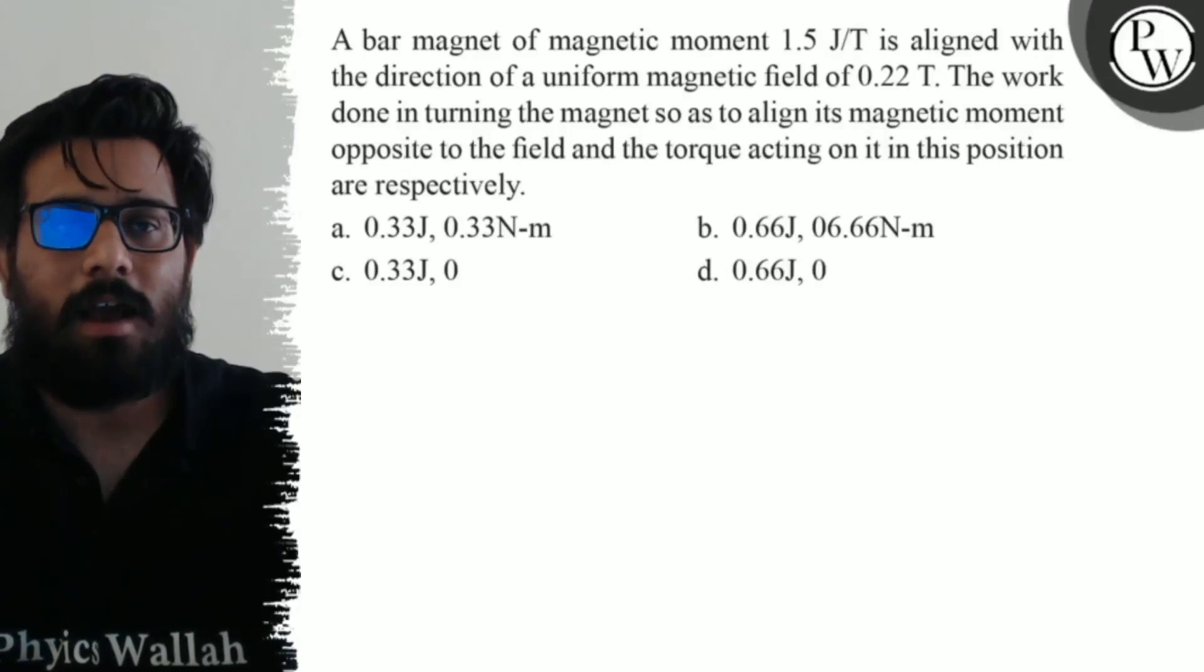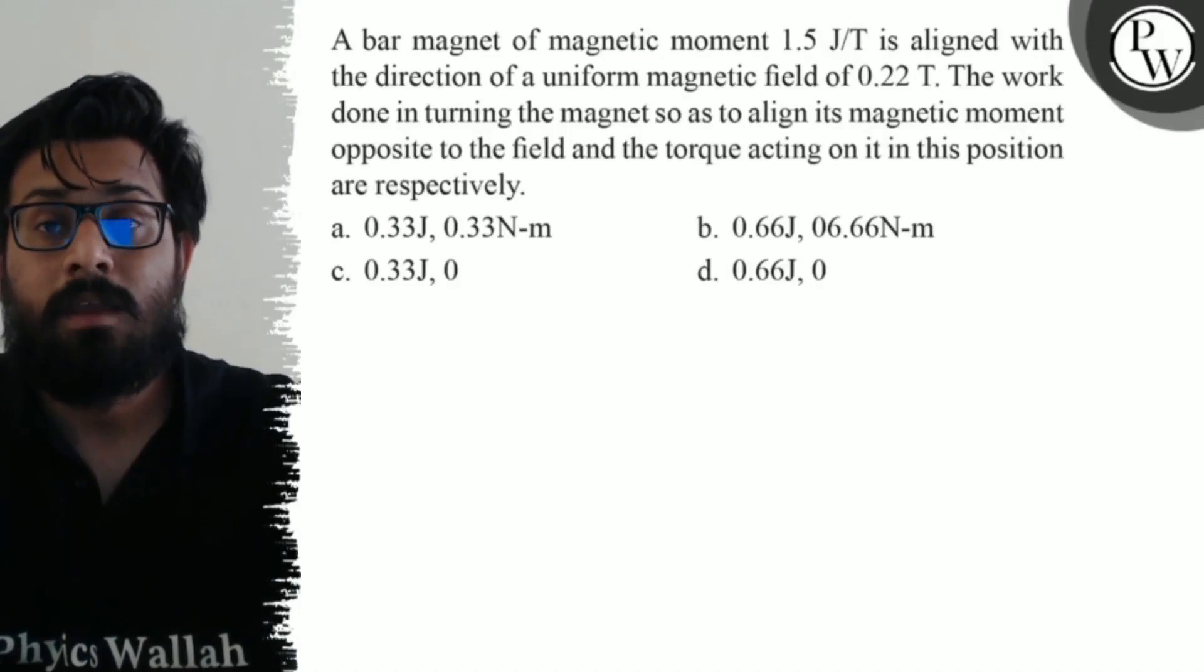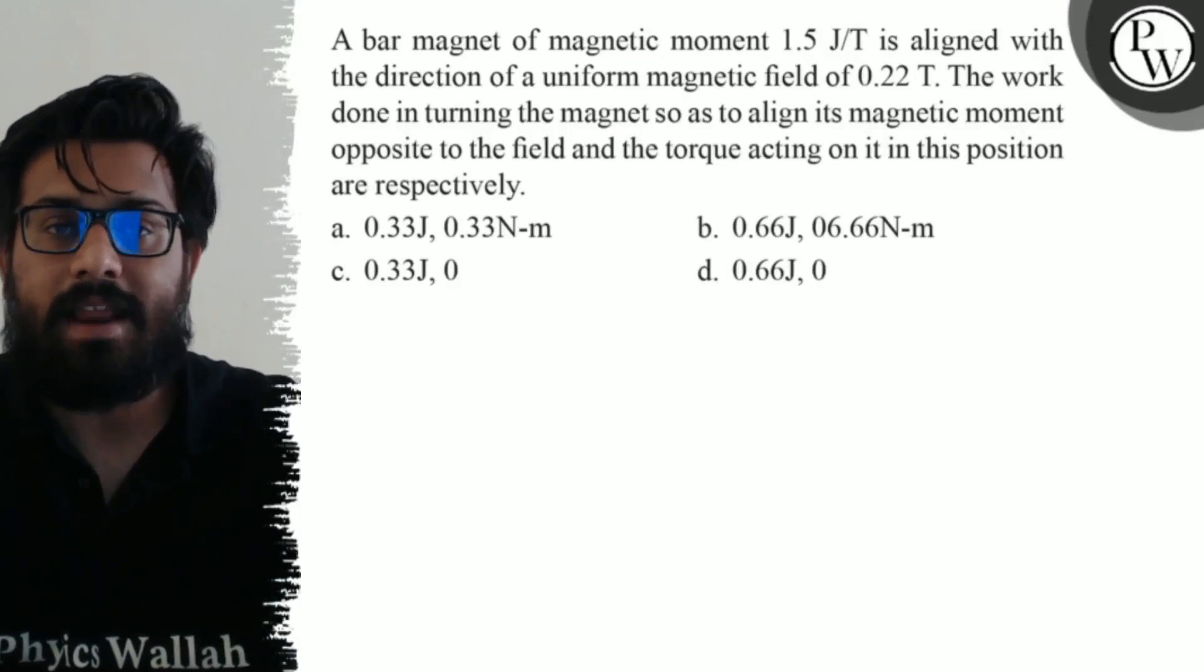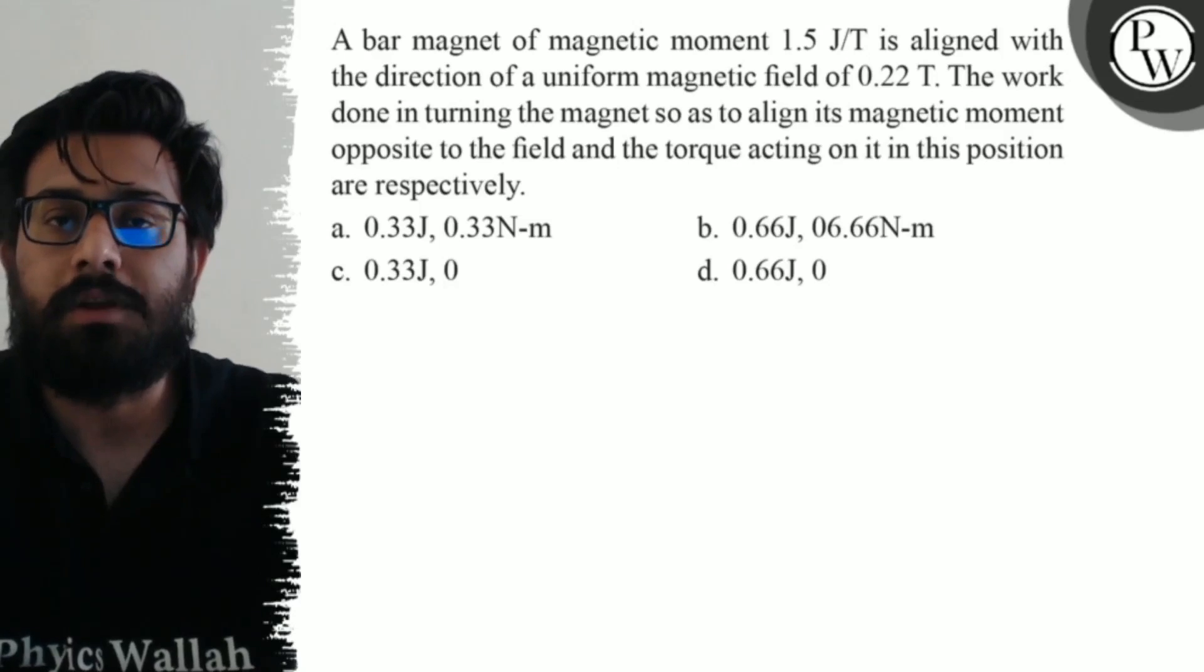Hello, so let's see the question. A bar magnet of magnetic moment 1.5 Joule per Tesla is aligned with the direction of a uniform magnetic field of 0.22 Tesla.